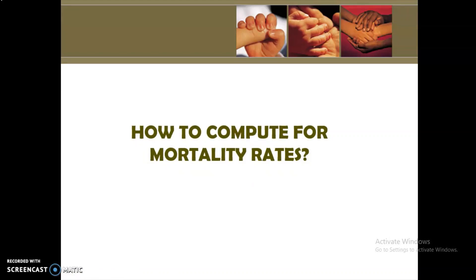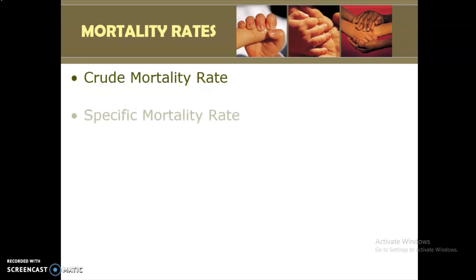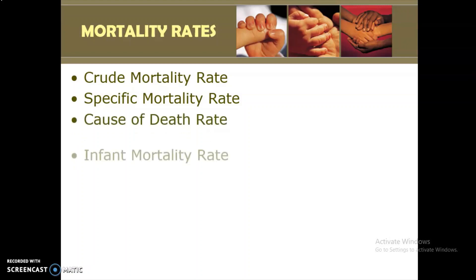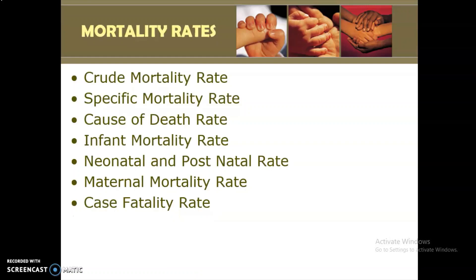As mentioned, under vital statistics in health indicators, we have fertility rates and mortality rates. Fertility rates refer to births while mortality rates refer to deaths. Under mortality rates, we have the crude mortality rate or general mortality rate, the specific death rate, the cause of death rate, infant mortality rate, neonatal and post-neonatal rate, maternal mortality rate, and case fatality rate. These are the examples we are going to discuss.